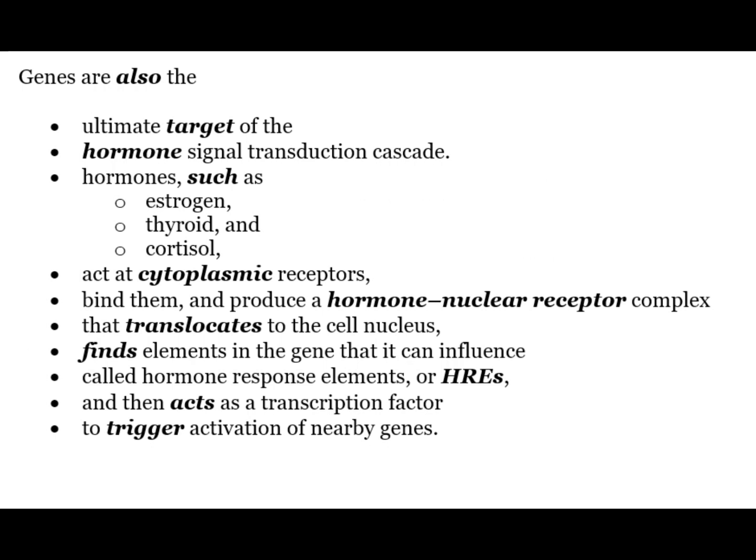Genes are also the ultimate target of the hormone signal transduction cascade. Hormones such as estrogen, thyroid and cortisol act at the cytoplasmic receptors, bind them and produce a hormone nuclear receptor complex that translocates to the nucleus, finds elements in the gene called hormone response elements or HREs, and then acts as transcription factors to trigger activation of nearby genes.